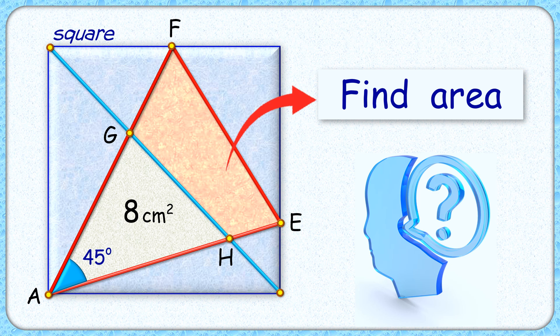Welcome to this interesting question. Given to us is a square and angle FAE is 45 degrees. The area of triangle GAH is 8 centimeters squared. The exciting part is, with this limited data, we have to find the area of quadrilateral EFGH.